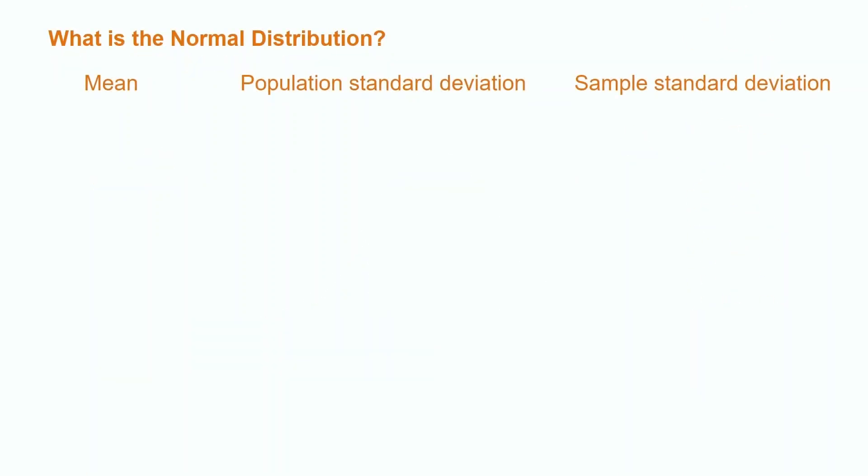Two key values that make up the standard normal distribution are the mean and standard deviation. If a variable is normally distributed, it will have a mean, mu, of 0 and a standard deviation, sigma, of 1. Values to the right of the mean are positive and values to the left of the mean are negative.